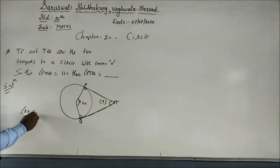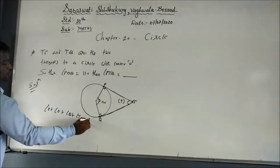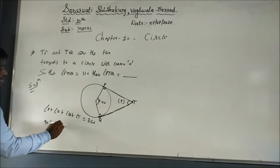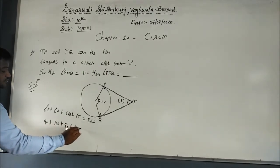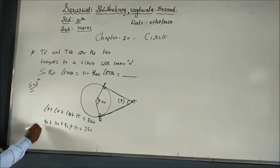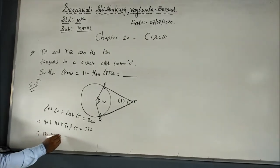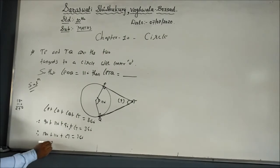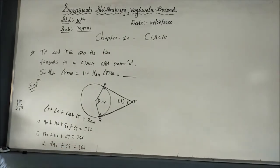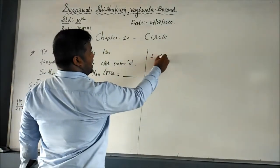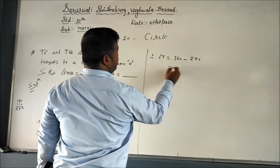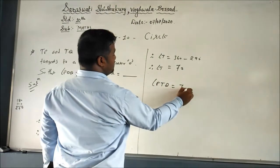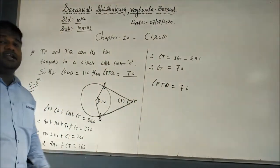Since OPTQ is a quadrilateral, the sum of all four angles equals 360 degrees. Angle P = 90, angle O = 110, angle Q = 90, plus angle T = 360. So 90 + 110 + 90 + angle T = 360, giving 290 + angle T = 360. Therefore angle PTQ = 360 − 290 = 70 degrees.